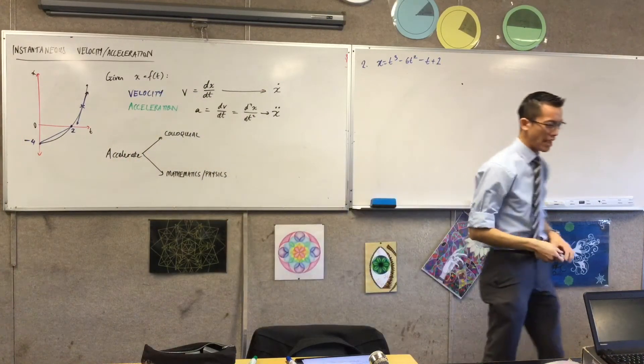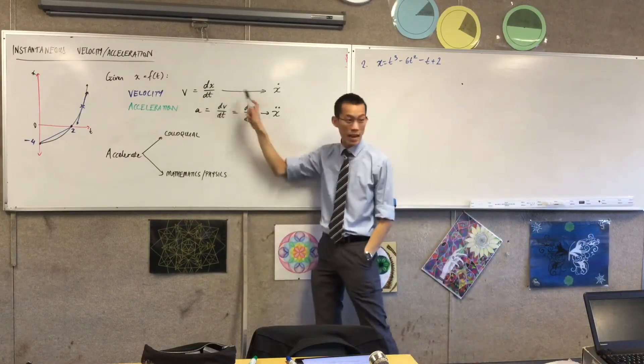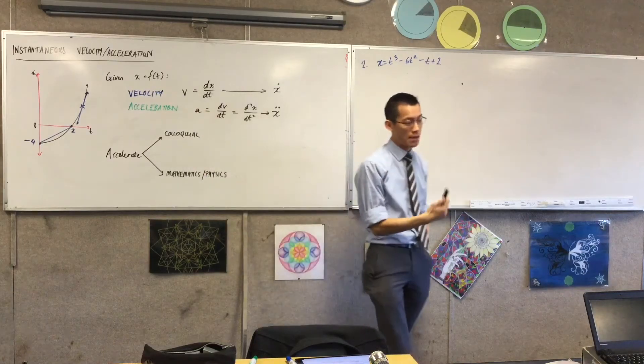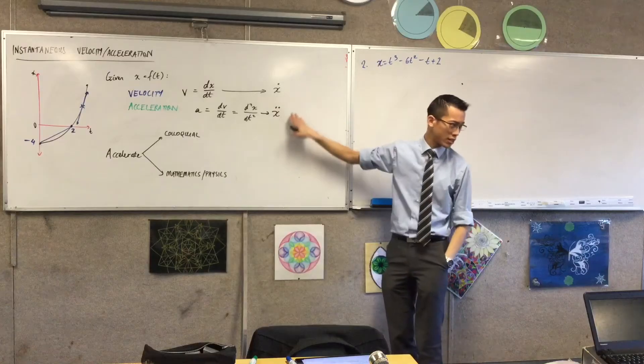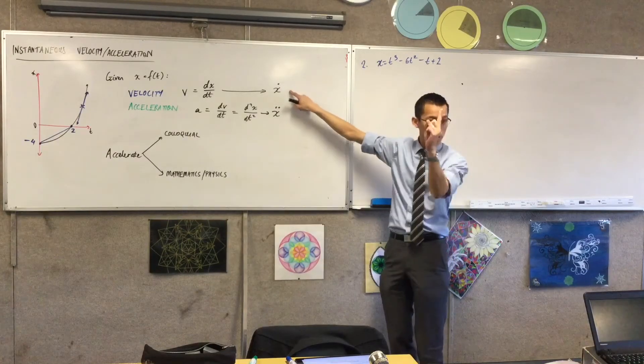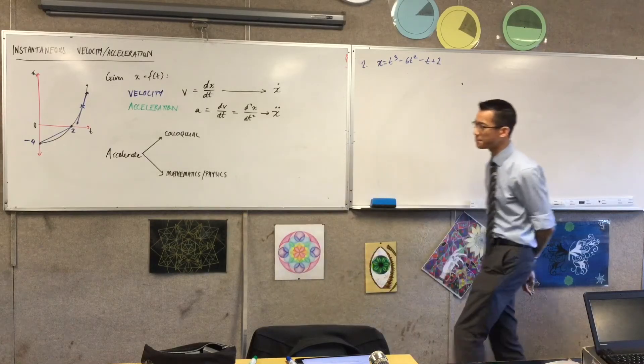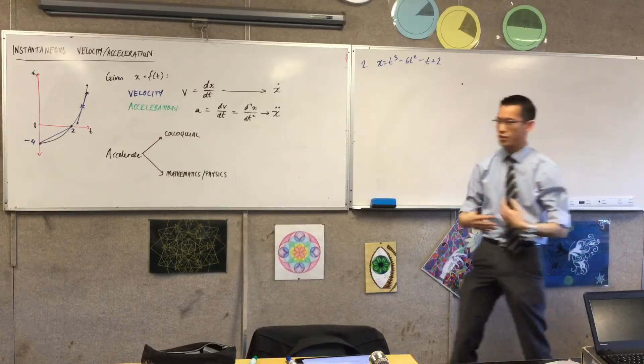Just like when we introduced f dash and f double dash notation, my preference is always to actually just write out what the derivatives are, or to say v or a, because they're pretty much unambiguous in this context. However, you need to be able to recognize when they say x dot or x double dot, what are they talking about? They mean first derivative with respect to time, second derivative with respect to time. That's all it means.